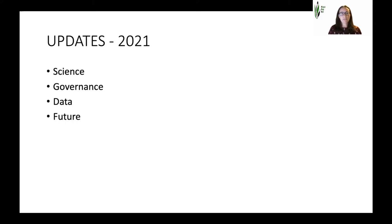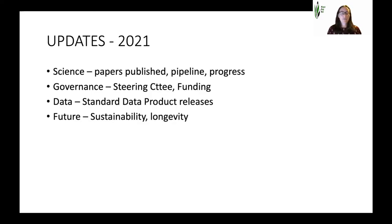In this talk I wanted to give updates around the science of what's happening in PlantPopNet, the governance of how we run the network, updates on the data, and then chat about the future. The idea of this talk is really just to set us up for the discussion sessions. For science, we can talk about papers published, the pipeline of work coming through, and progress against what we set out to do. For governance, I can talk about the steering committee and funding. I'll also cover standard data product releases and the future sustainability and longevity of the network.